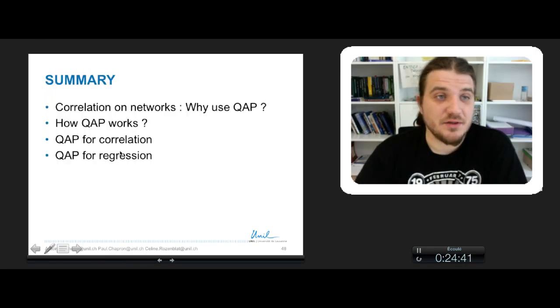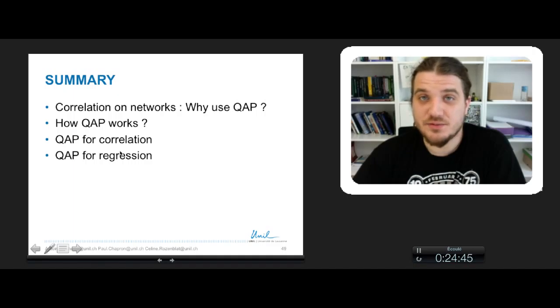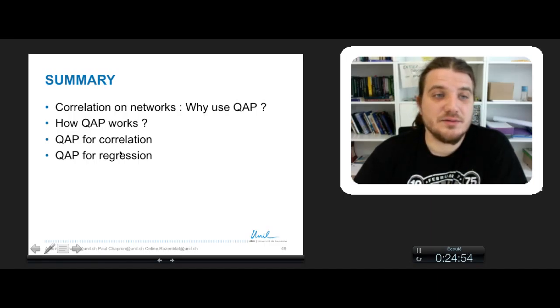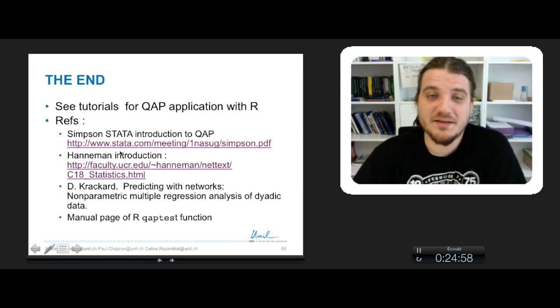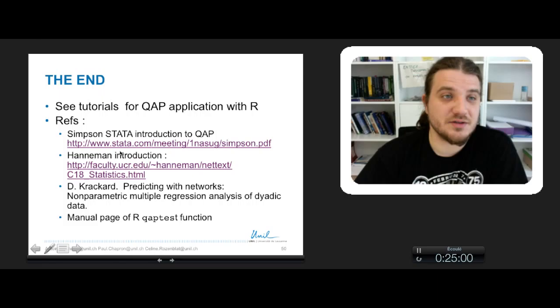So that's it for the course. We've seen some elements about statistics on networks and why we should use QAP to remove network's effects and dependence of observations. We have seen correlation and regression. And that's it pretty much for the course.